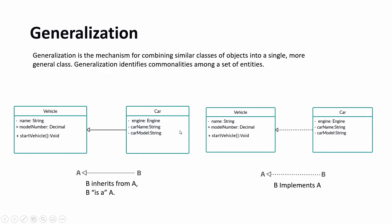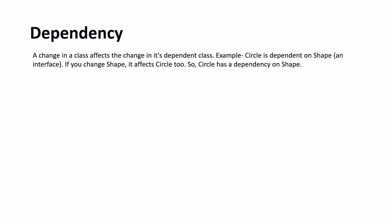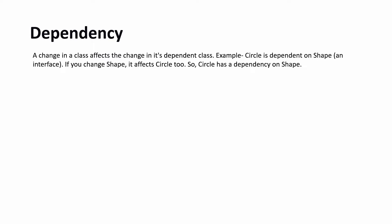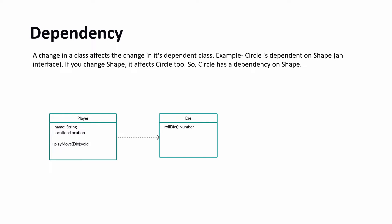Dependency means one class is dependent on another — a change in one class may affect the dependent class. For example, in a Ludo game a Player rolls a Die and then makes a move. The play-move operation receives a Die object; the player needs to roll the die and based on the number changes its location. To complete this operation Player is dependent on Die — whatever the dice outcome, the state of Player may change. Dependency is represented with a dotted line and a triangle arrow.